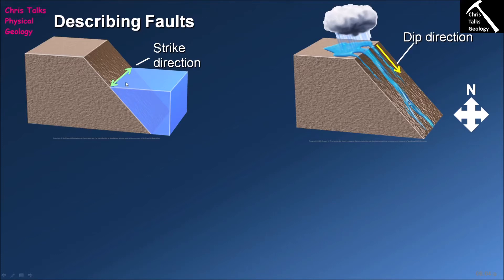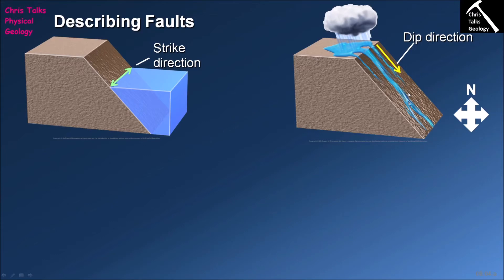The other measurement we can take of our fault plane is referred to as the strike, and the strike is 90 degrees to the dip direction. The strike tells us about the general trend of our fault — whether it's going approximately north-south, east-west, or northwest-southeast, for instance. So when describing a fault plane we can collect three pieces of information: the dip, the dip direction, and the strike.